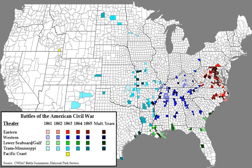The battles of the American Civil War were fought between April 12, 1861 and May 12–13, 1865 in 23 states: Alabama,